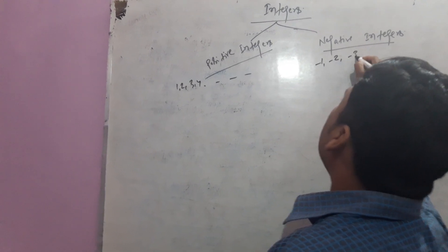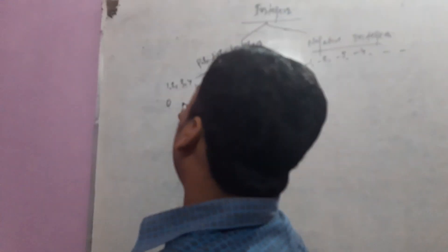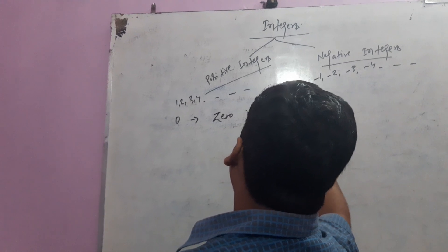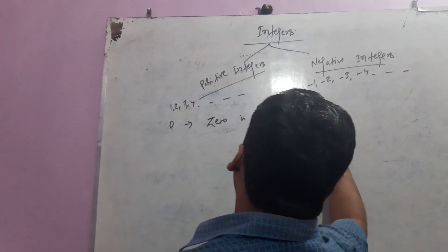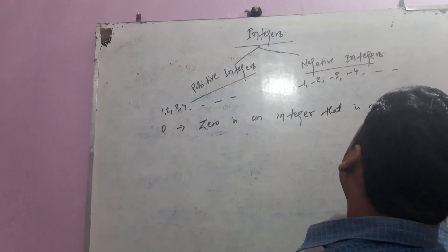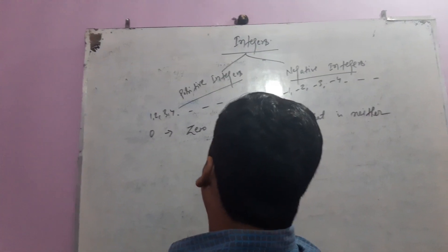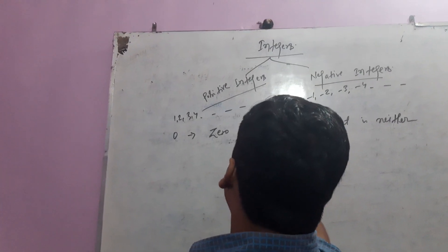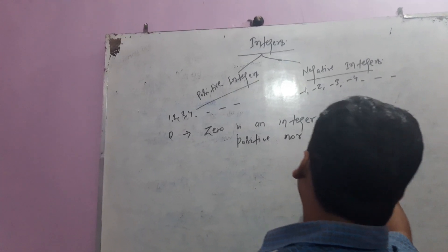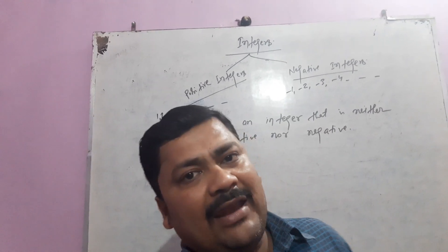All integers that contain a negative sign are called negative integers. Now, here one thing we have to remember: 0 is an integer that is neither positive nor negative. So leaving 0, all the other integers are categorized into two groups: positive and negative.